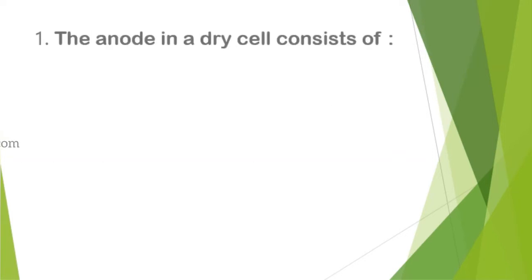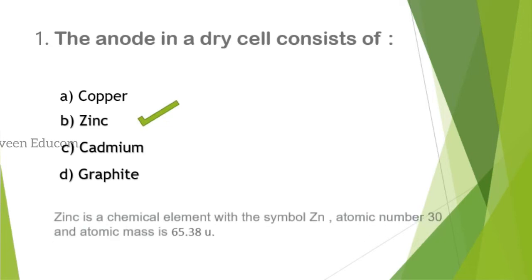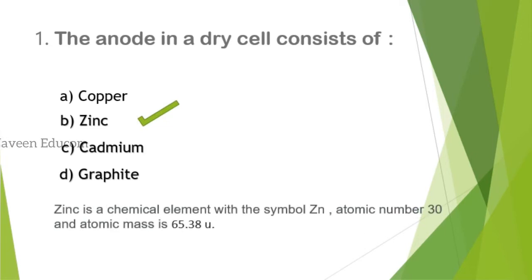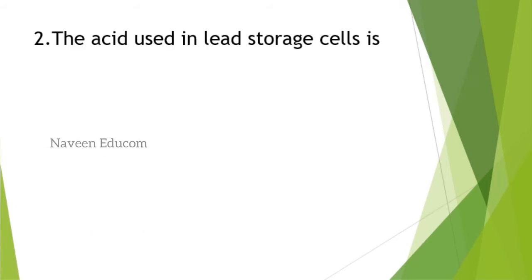The anode in a dry cell consists of... Students, please note some important points related with the electrochemistry portion regarding the cell. That's very important. Go through the different types of cells. The answer is option B, zinc. Zinc is a chemical element with atomic number 30 and atomic mass 65.38 units. Kindly go through some important topics related with cells.